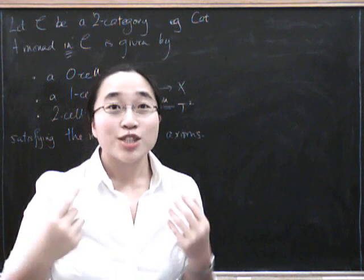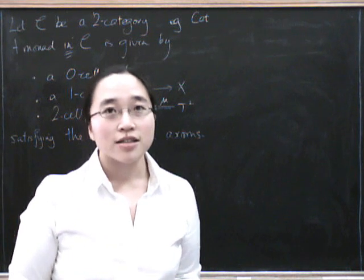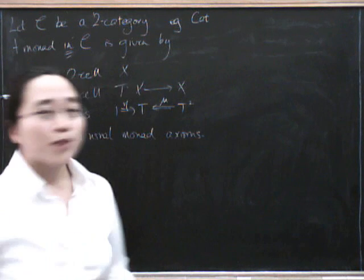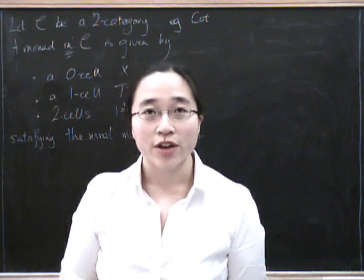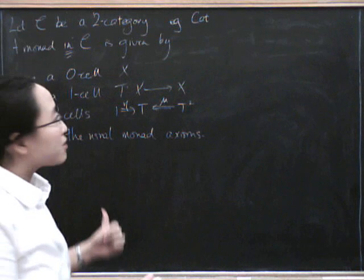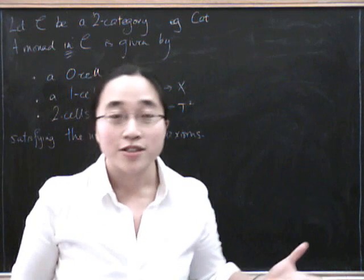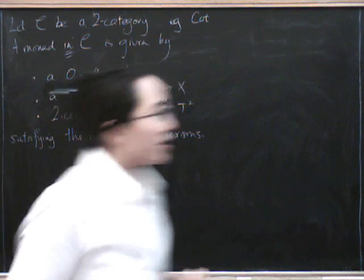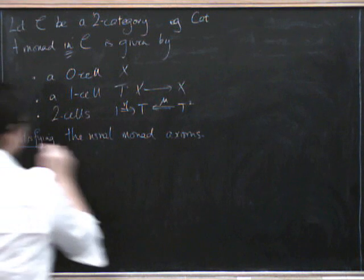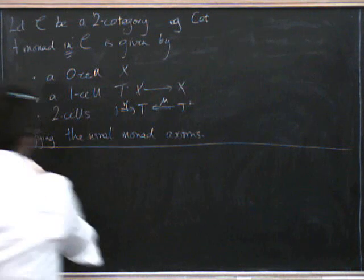In fact we don't just get monads in a 2-category — we get an entire 2-category of monads inside any 2-category, and this is what happens in Street's paper, 'The Formal Theory of Monads.' So what we have to do now is think up a notion of morphism of monads — a monad functor.